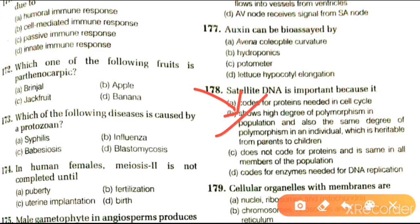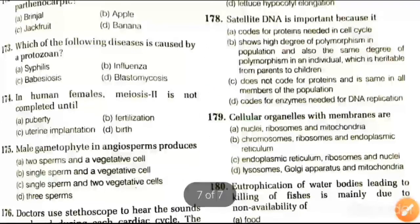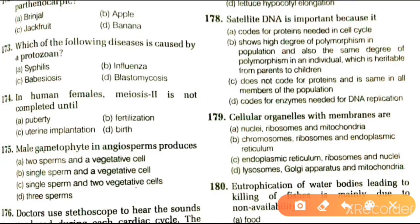Next question: cell organelles with membrane are nuclei, ribosome, mitochondria, chromosome; ribosome and endoplasmic reticulum; endoplasmic reticulum, ribosome, nuclei, lysosomes, Golgi apparatus; or nuclei, lysosomes, Golgi apparatus. The answer is D.